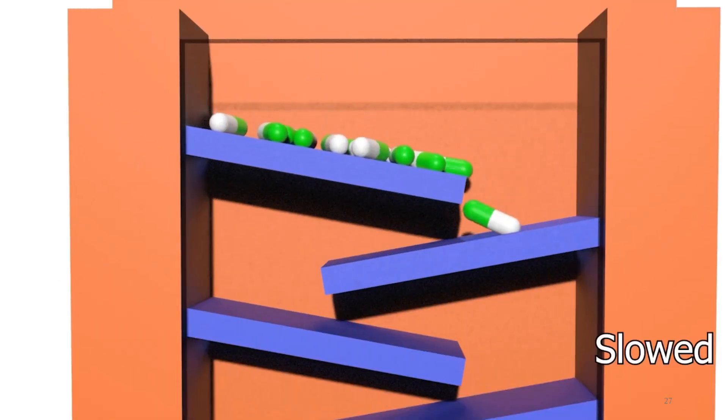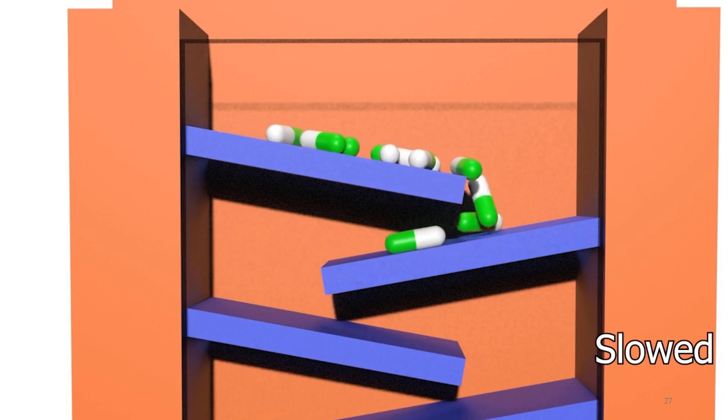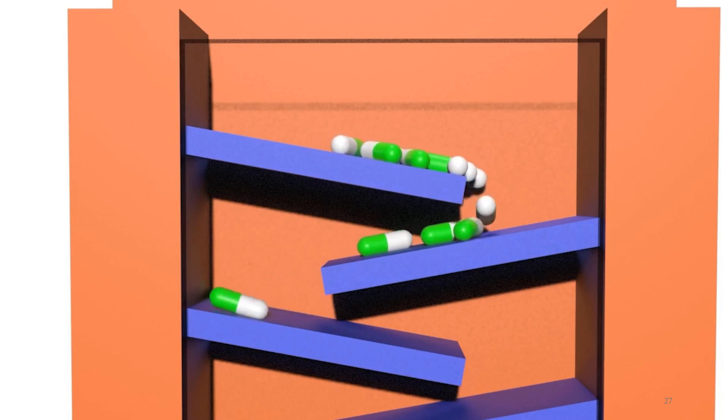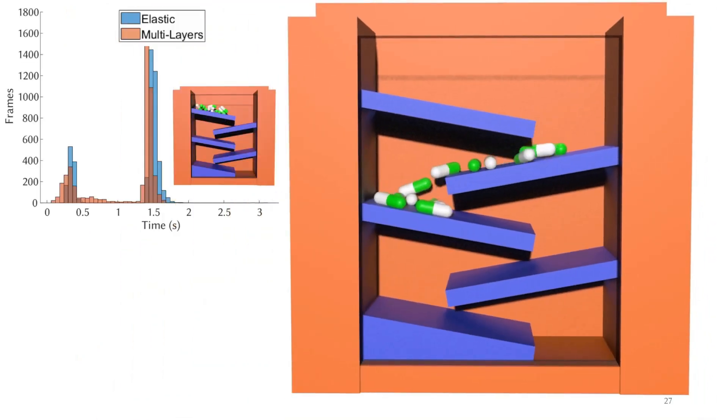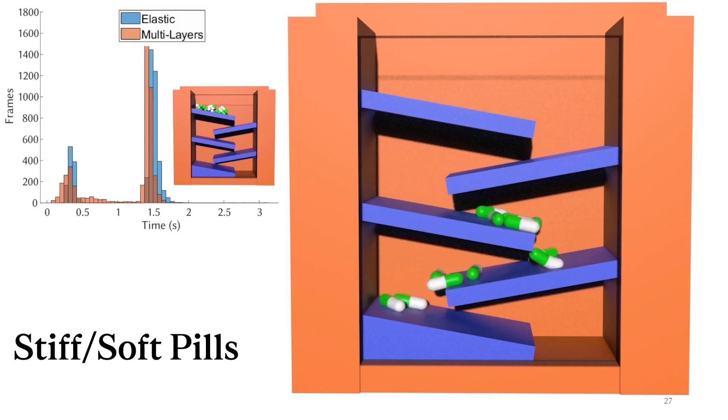Here's another contact example using deformable capsules with green stiff sides and white soft sides, simulated with a relatively large time step of 0.01 in discrete collision detection. Our solver is faster than the elastic simulation at any point in time, often greatly outperforming it and at worst consistently cutting on the computation time.